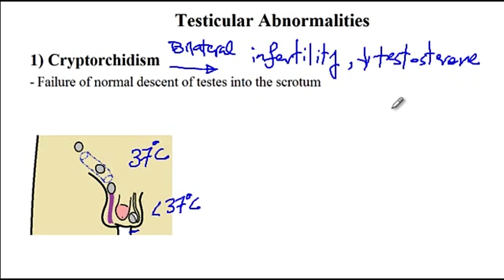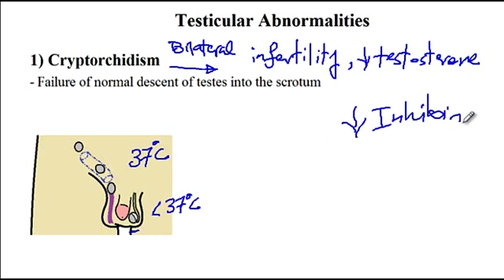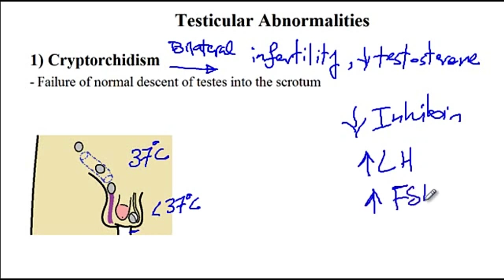In addition, there are degenerative changes inside the Sertoli cells, as a consequence of which there would be decreased levels of inhibin hormone. Inhibin is required for decreasing the levels of LH and FSH. So now that inhibin is decreased, there won't be any negative feedback on FSH and LH, and therefore luteinizing hormone as well as follicle-stimulating hormone would be elevated. Another reason these two hormones are elevated is that testosterone also provides negative feedback to LH and FSH, and since testosterone is low, LH and FSH would be elevated.